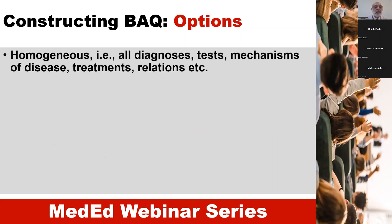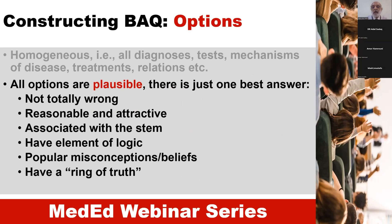When constructing the options, they must be homogeneous, meaning we cannot have options that assess totally unrelated areas. Either all statements relate to diagnosis, or investigations, or mechanisms of disease, or treatments, etc. All the options are plausible — as said previously, every option has some degree of truth, so they are not totally wrong. They are reasonable, attractive, linked with the stem, and logical. We can also use common misconceptions and beliefs as options, and each option should have a ring of truth.